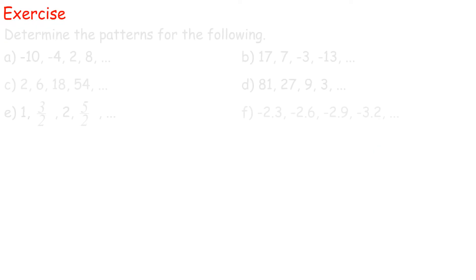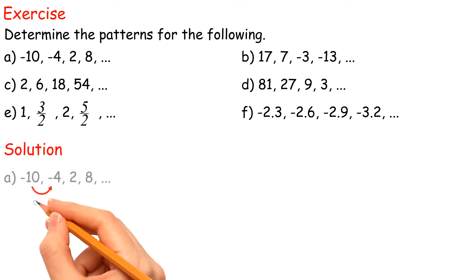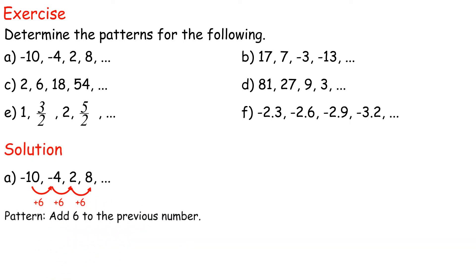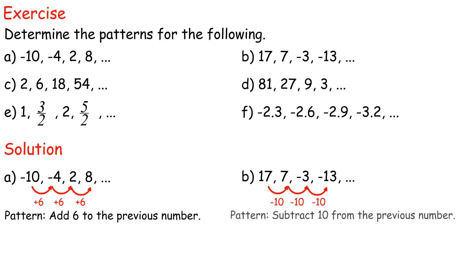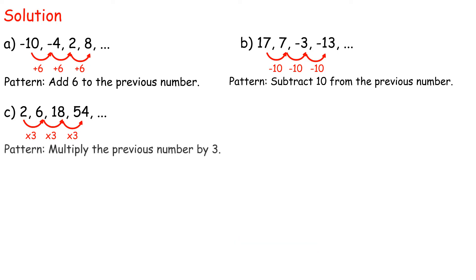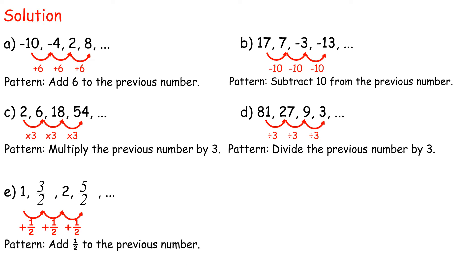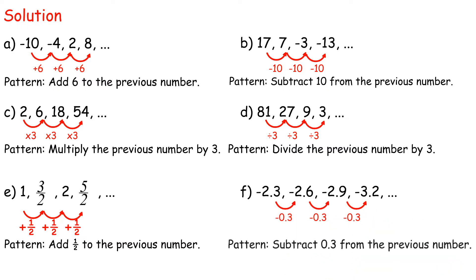Exercise: Determine the patterns for the following. Solution. A: The pattern is add six to the previous number. B: The pattern is subtract ten from the previous number. C: The pattern is multiply the previous number by three. D: The pattern is divide the previous number by three. E: The pattern is add half to the previous number. F: The pattern is subtract 0.3 from the previous number.